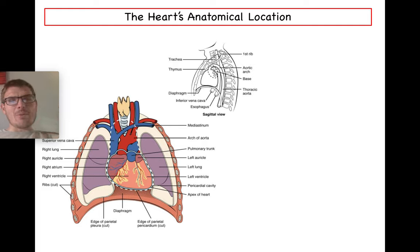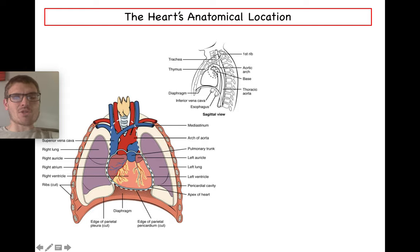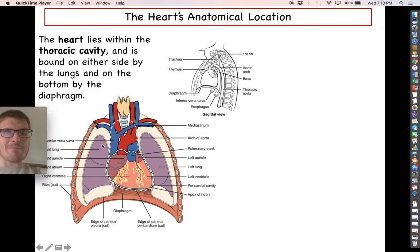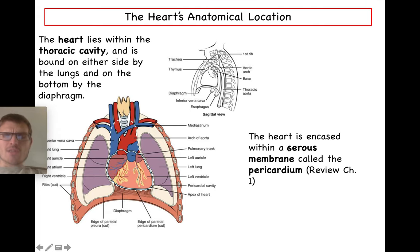The first thing to do is get a little anatomy out of the way. Everything from the waist up is split into two major cavities: the thoracic cavity, which is everything above the diaphragm, and the abdominal pelvic cavity, which is everything below. The heart lies in the thoracic cavity, bound on either side by the lungs and on the bottom by the diaphragm. The heart itself, along with some of the major arteries and veins coming off it, is contained within an imaginary space called the mediastinum. The heart is encased within a serous membrane, and this pair of serous membranes is called the pericardium.